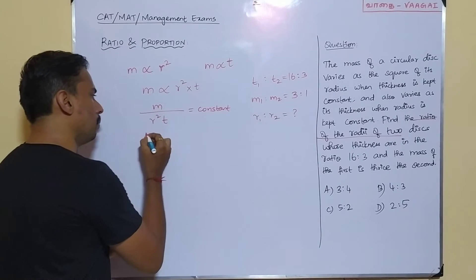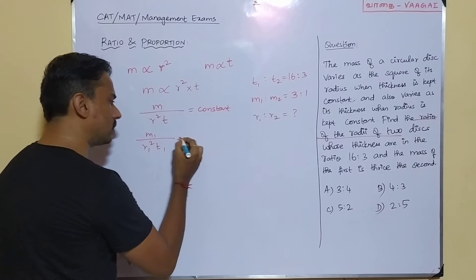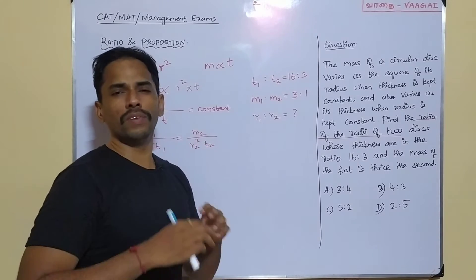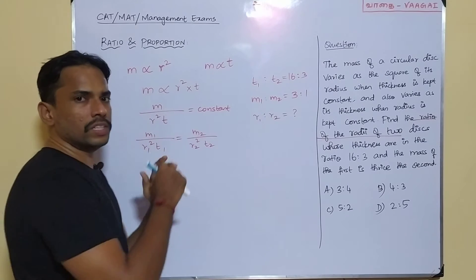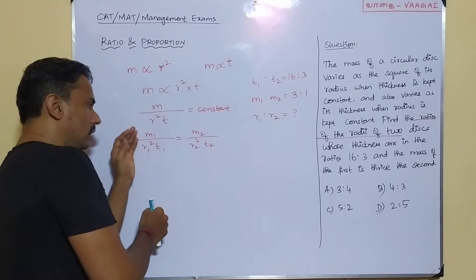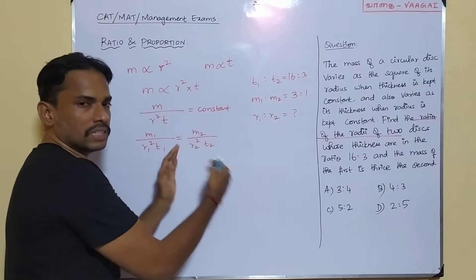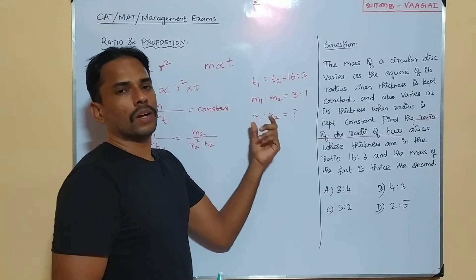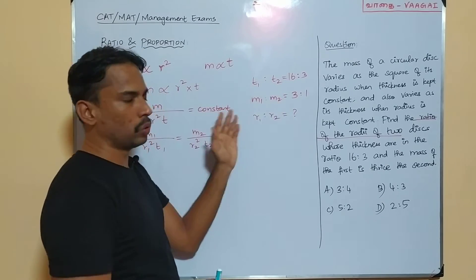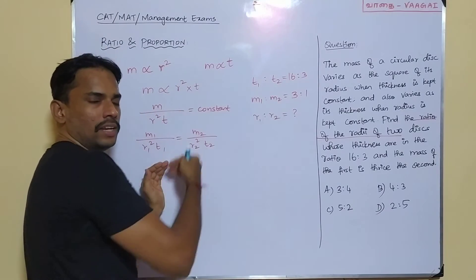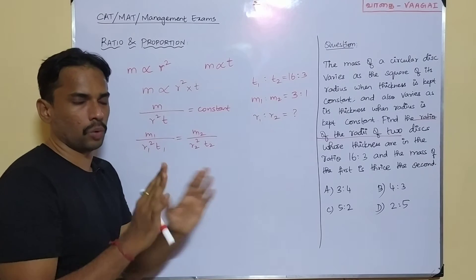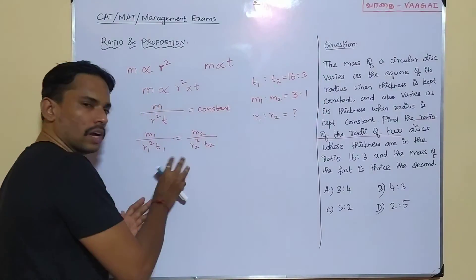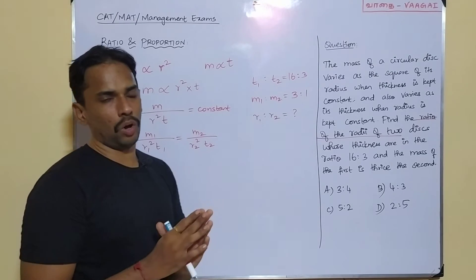In other words, M1 divided by R1 squared times T1 will be the same as M2 divided by R2 squared times T2. Since M divided by R squared into T is always equal to a constant, whatever values the two disks take, that ratio will be equal in both cases. Since we are comparing two disks, every measure has two values, and this relation will help us get the answer.